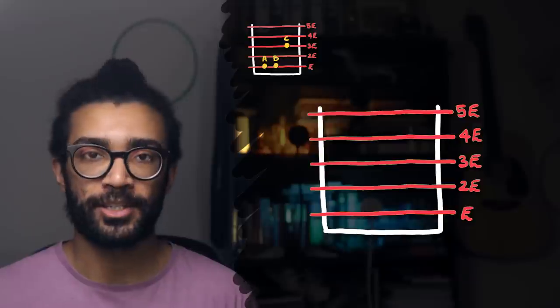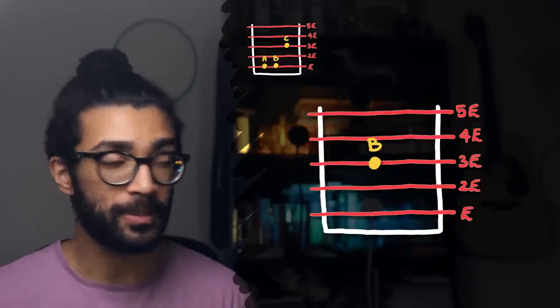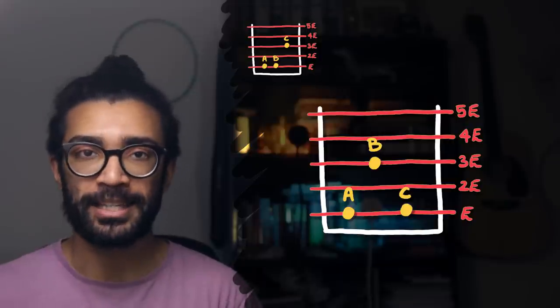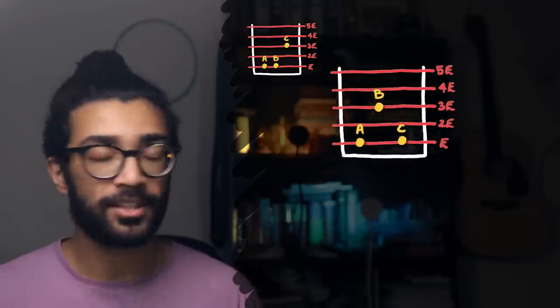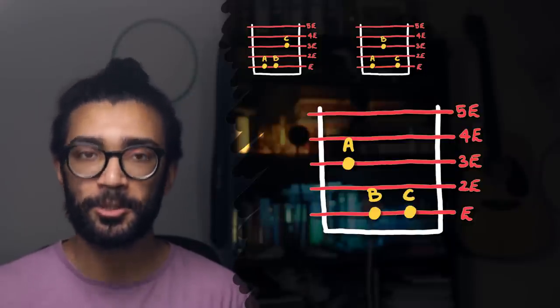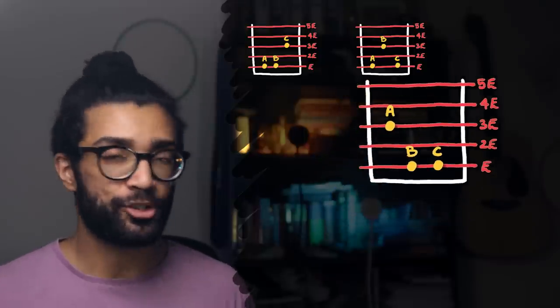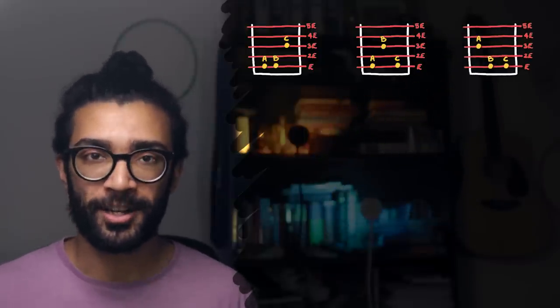But of course, another possible configuration is if particle B, for example, were to be in the 3E energy level, and particles A and C were to be in the lowest energy level. And another configuration still is when particle A is in the 3E level, and particles B and C are in the lowest possible energy level. Again, the total energy is 5E, but we're just changing how it's distributed over the 3 particles in the box.